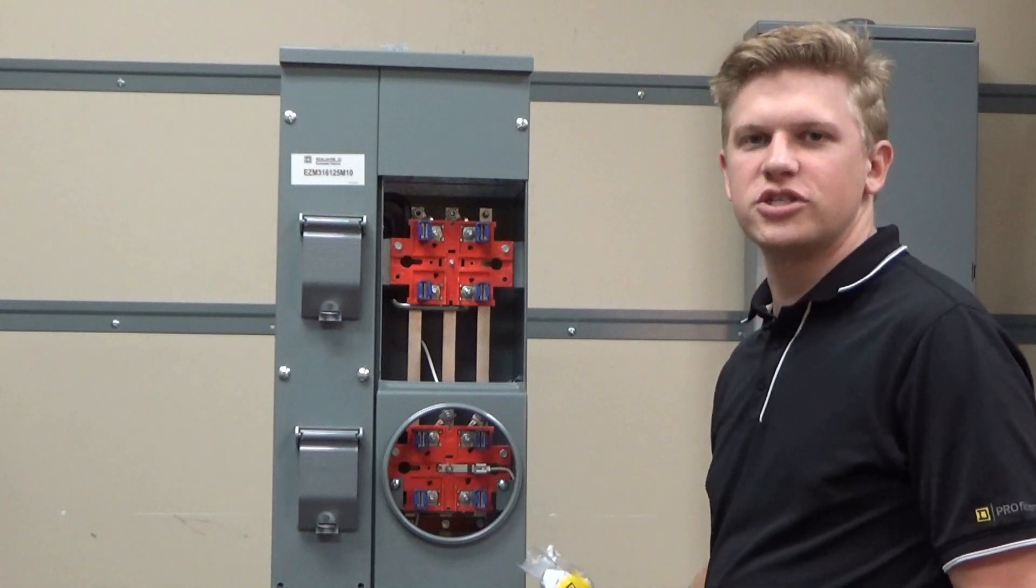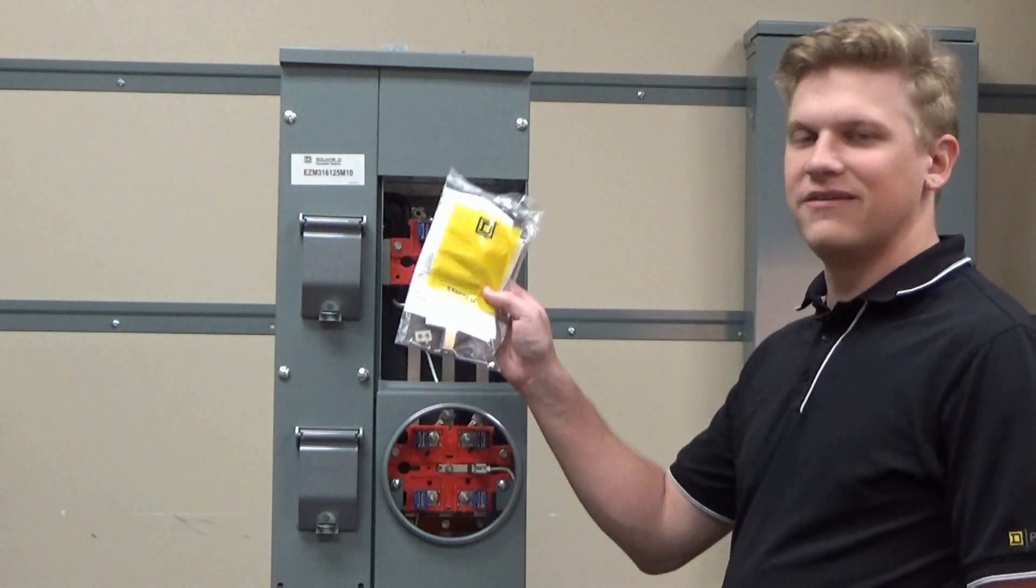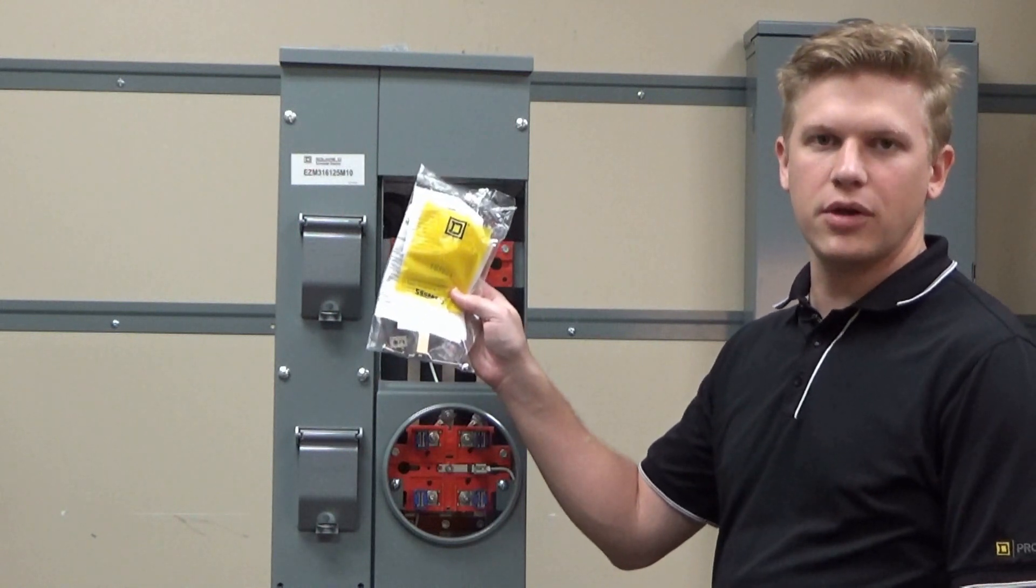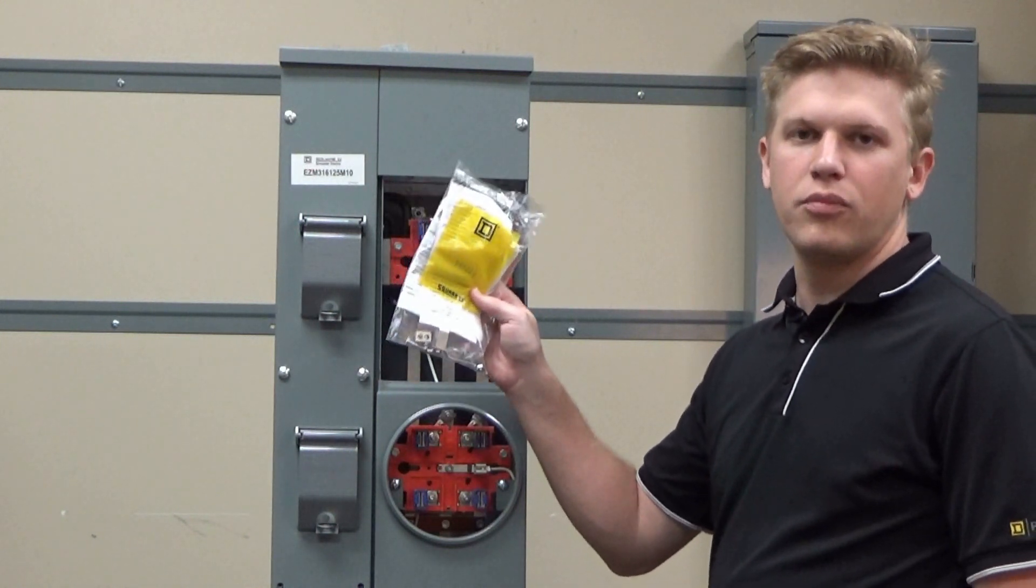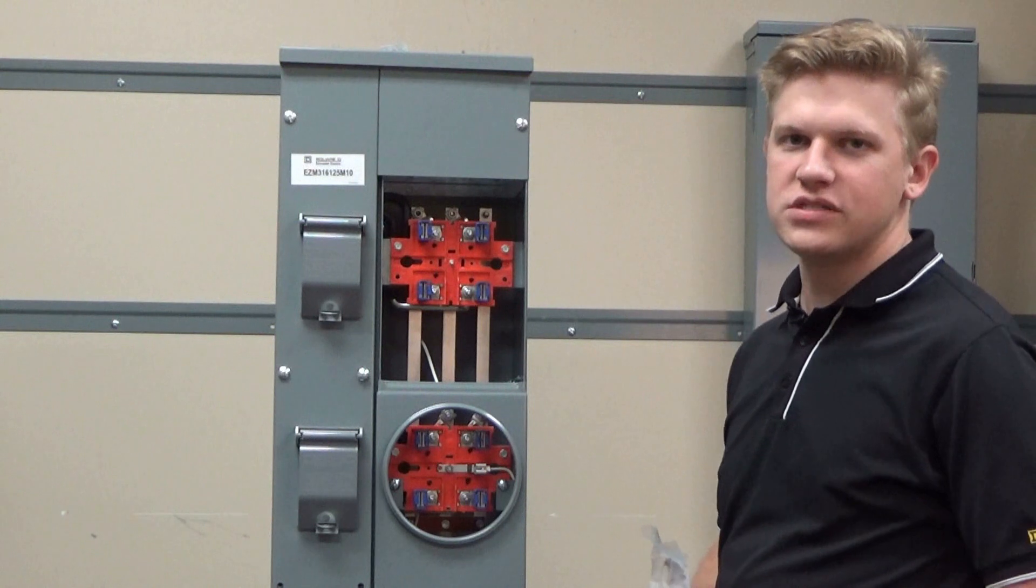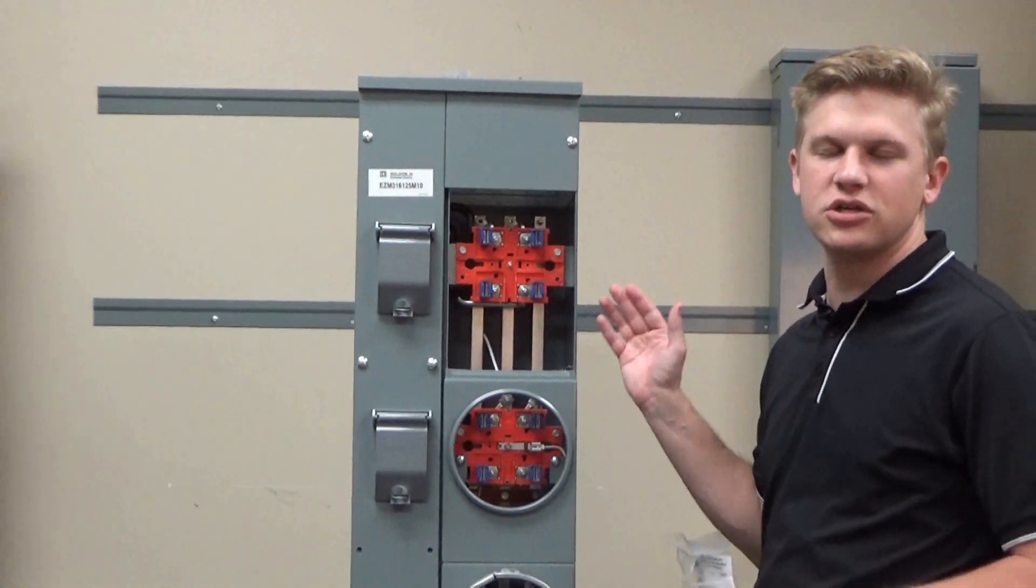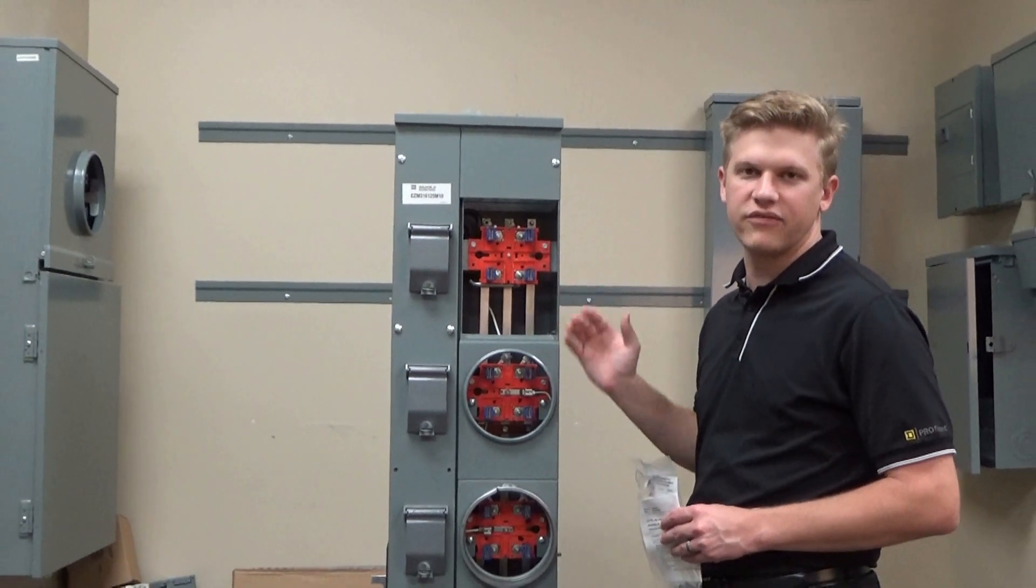In this video we'll be showing you how to install the 5J fifth jaw kit into an EZM or meter pack branch device. For this video we'll be using an EZM device, but the procedure is the same for a meter pack device as well.